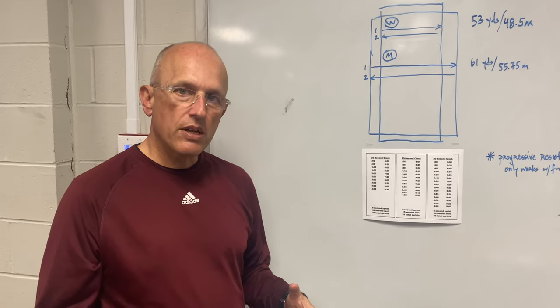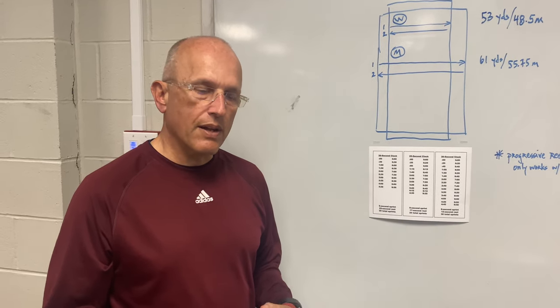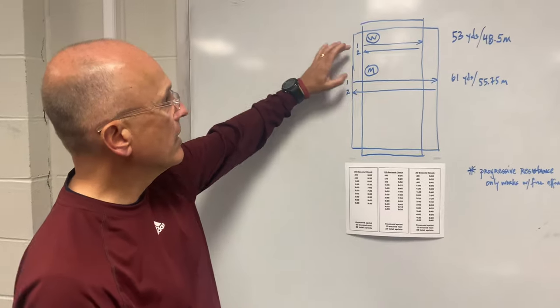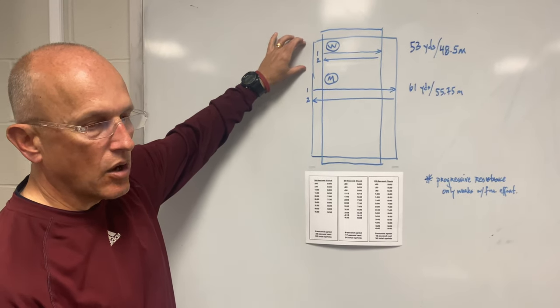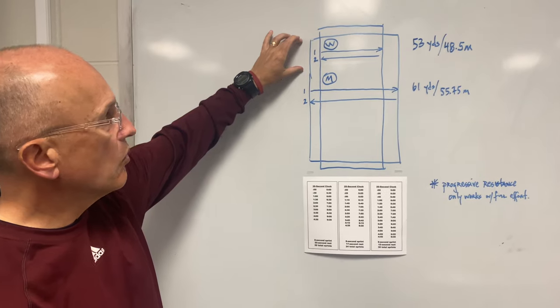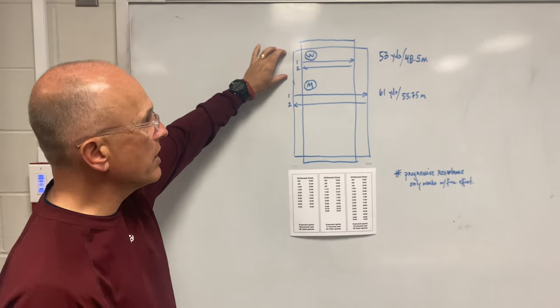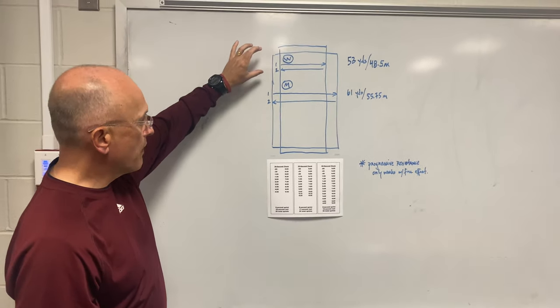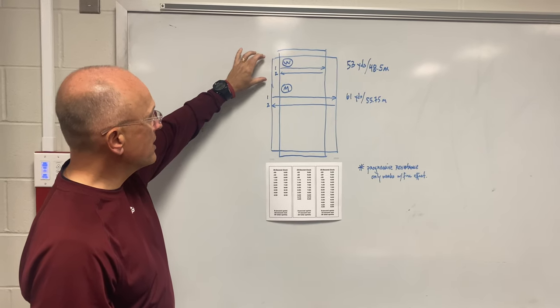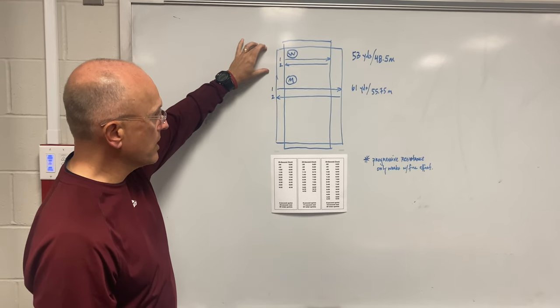If you're just going to coast, then you won't tell where your fitness level really is. So again, you can come back to this picture on your video, but essentially women are running 53 yards or 48.5 meters from a 30 second clock to a 25 second clock to a 20 second clock.